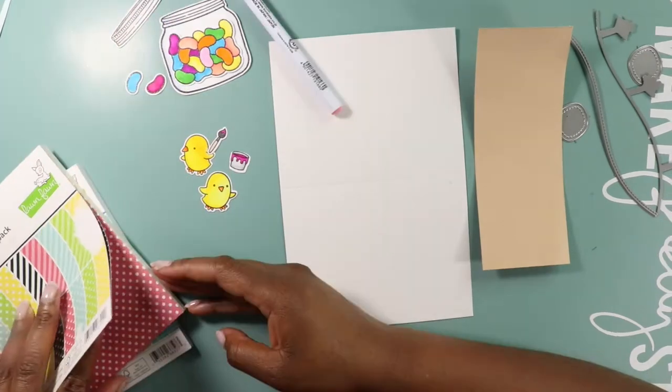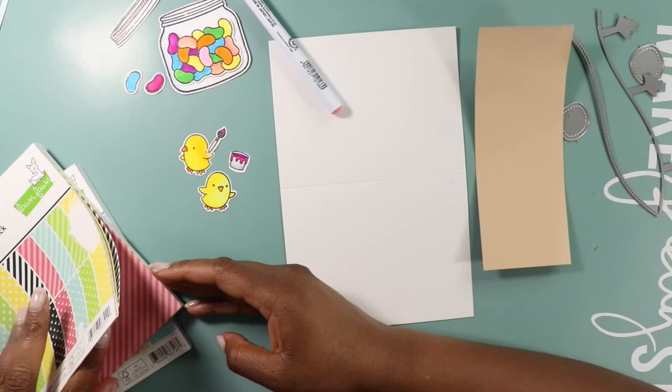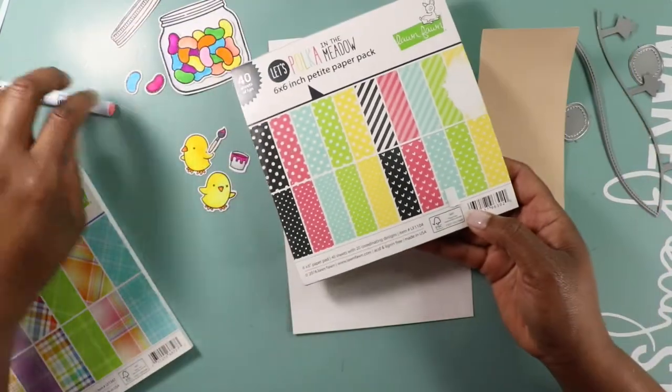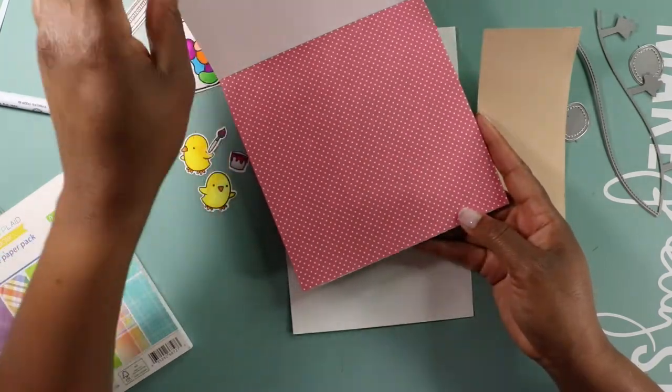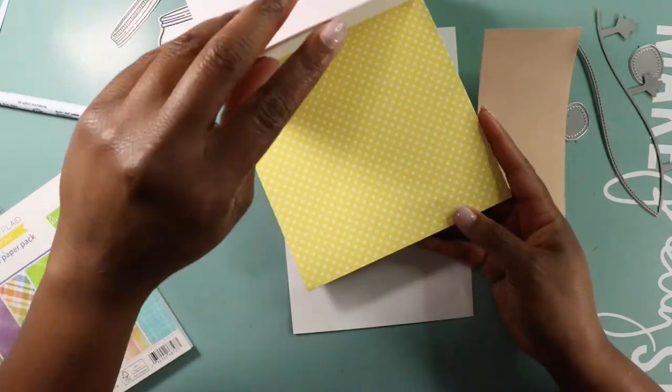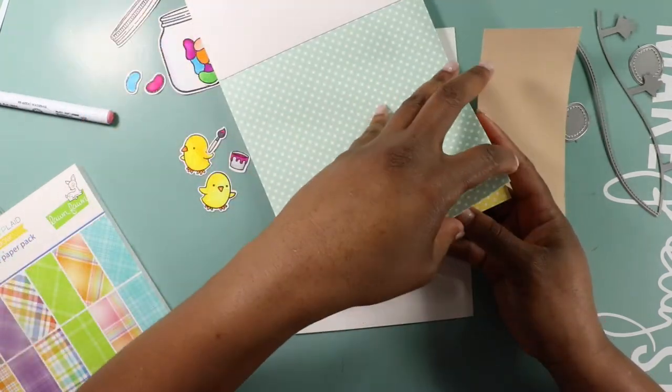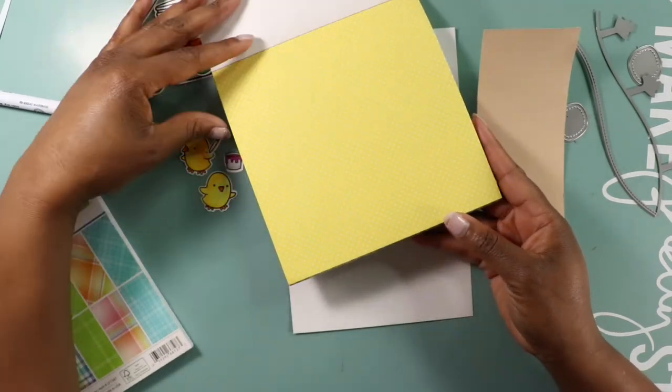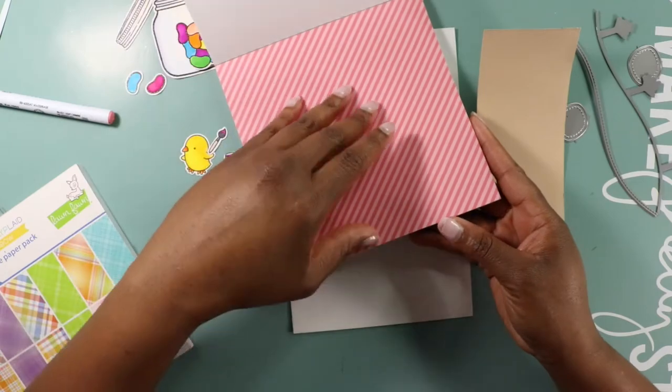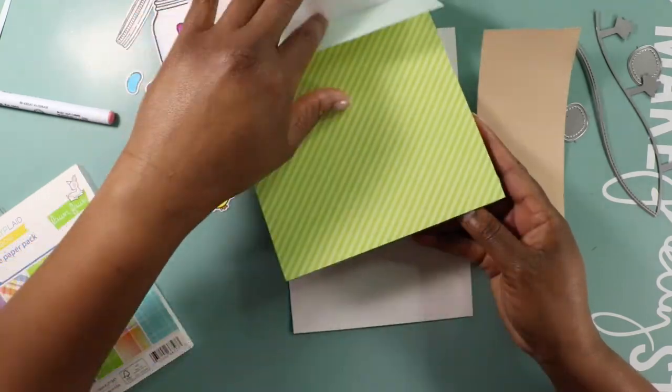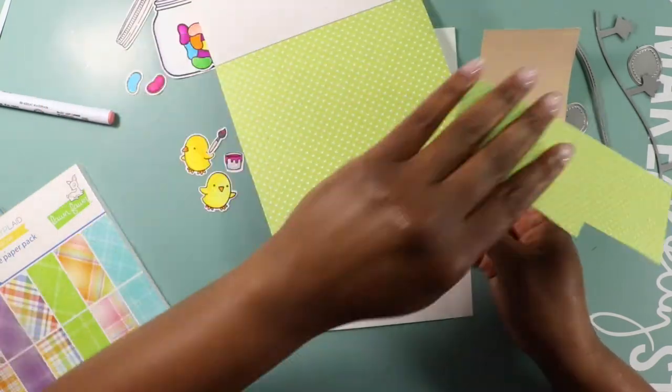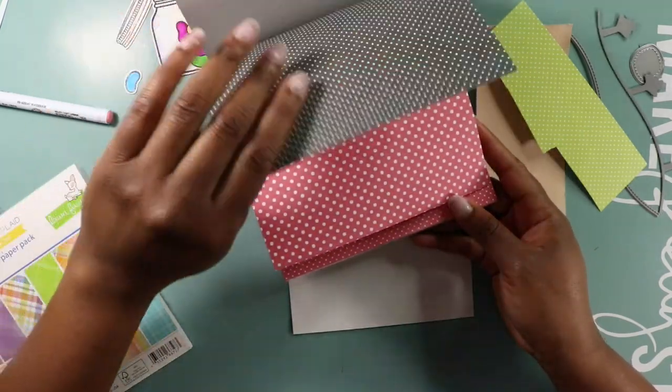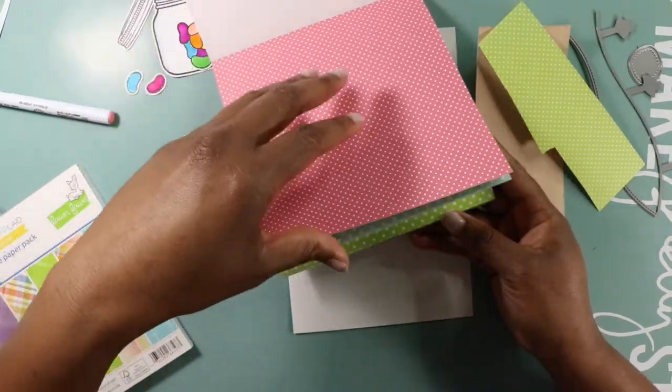I'm using paper from the Lawn Fawn Let's Polka in the Meadow pad. This is probably one of my favorite paper pads. I love polka dots and stripes and it's just beautiful. I am choosing the paper that I'm going to use for my sky, for my grass, and for the little bushes on my trees.